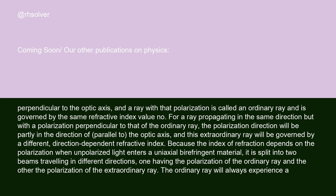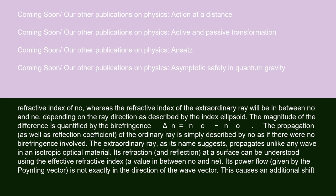Because the index of refraction depends on the polarization, when unpolarized light enters a uniaxial birefringent material it is split into two beams traveling in different directions: one having the polarization of the ordinary ray, and the other the polarization of the extraordinary ray. The ordinary ray will always experience a refractive index of n-o, whereas the refractive index of the extraordinary ray will be between n-o and n-e, depending on the ray direction as described by the index ellipsoid.